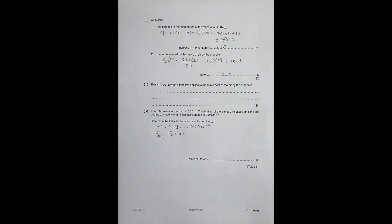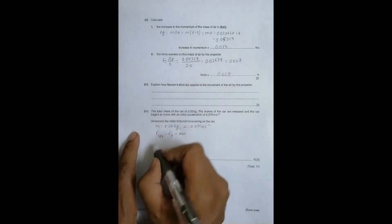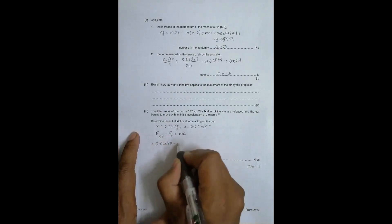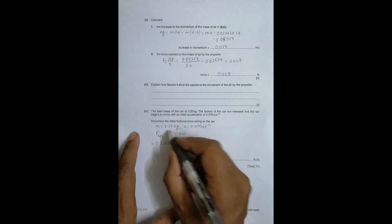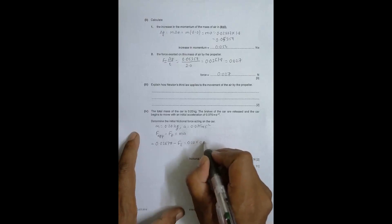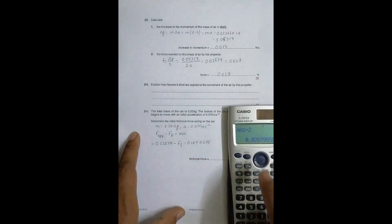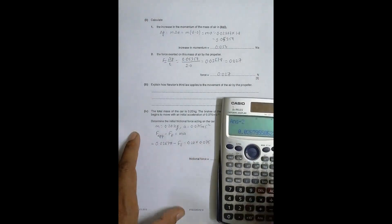It's the simple second law which says that the resultant force is equal to mass into acceleration of the system. The force applied is this thing, 0.02679 minus frictional force is equal to mass is 0.20 into a is 0.075.